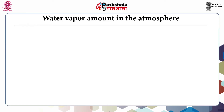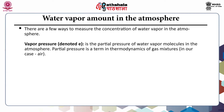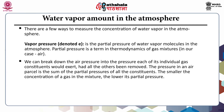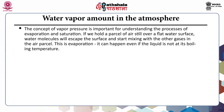There are a few ways to measure the concentration of water vapor in the atmosphere. The first is vapor pressure, denoted by E — the partial pressure of water vapor molecules in the atmosphere. Partial pressure is a thermodynamic term for gas mixtures; the pressure in an air parcel is the sum of the partial pressures of all its constituents. The smaller the concentration of a gas, the lower its partial pressure. However, since molecules of different constituents have different masses, partial pressure is not directly proportional to molecular concentration. The concept of vapor pressure is important for understanding evaporation and saturation.